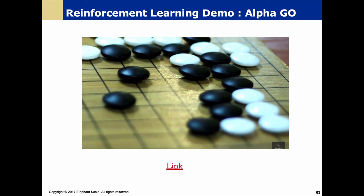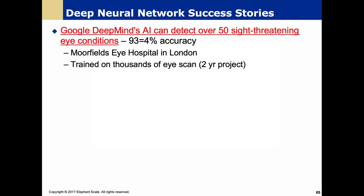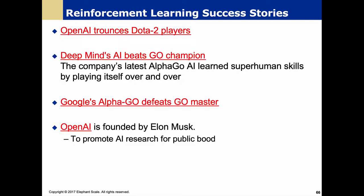The game of Go — prior to recent advances — was thought to be a game where AI would have difficulty beating humans due to its complexities beyond chess. Through reinforcement learning, AI has become very effective at playing Go. Google DeepMind has been a leader in reinforcement learning, and contrary to what you might think, they don't always work on video games — they've used their approach to detect eye conditions with very high accuracy. OpenAI, one of Elon Musk's companies, is also working in this area.